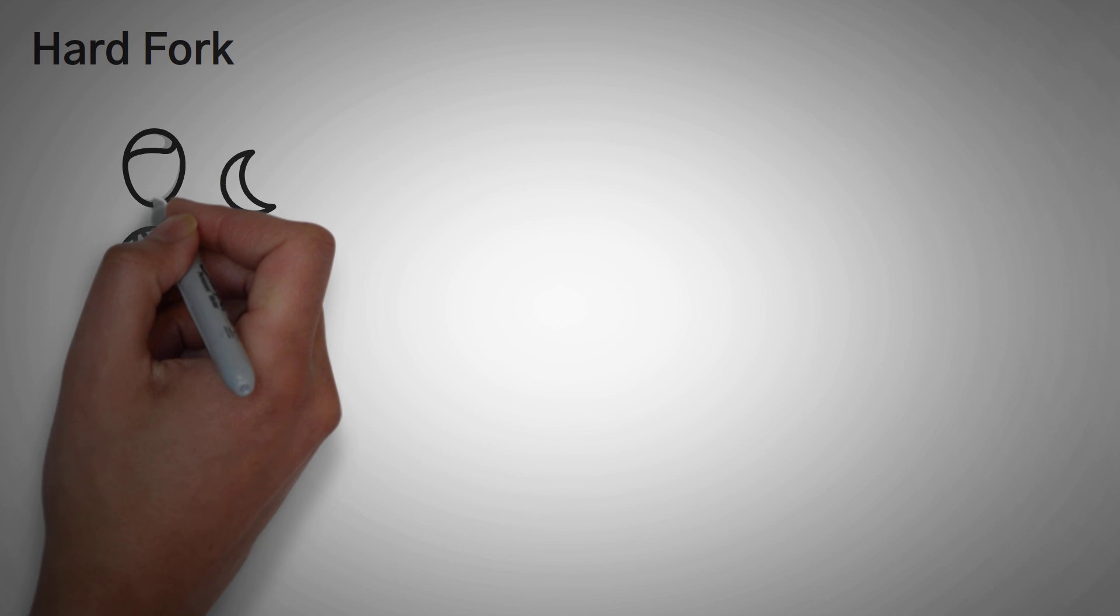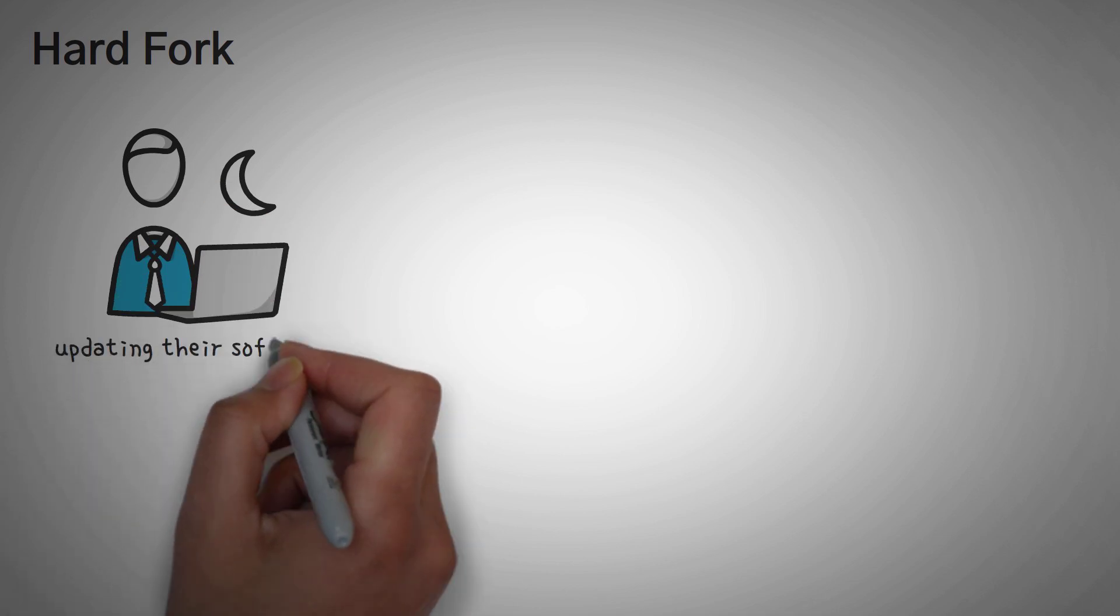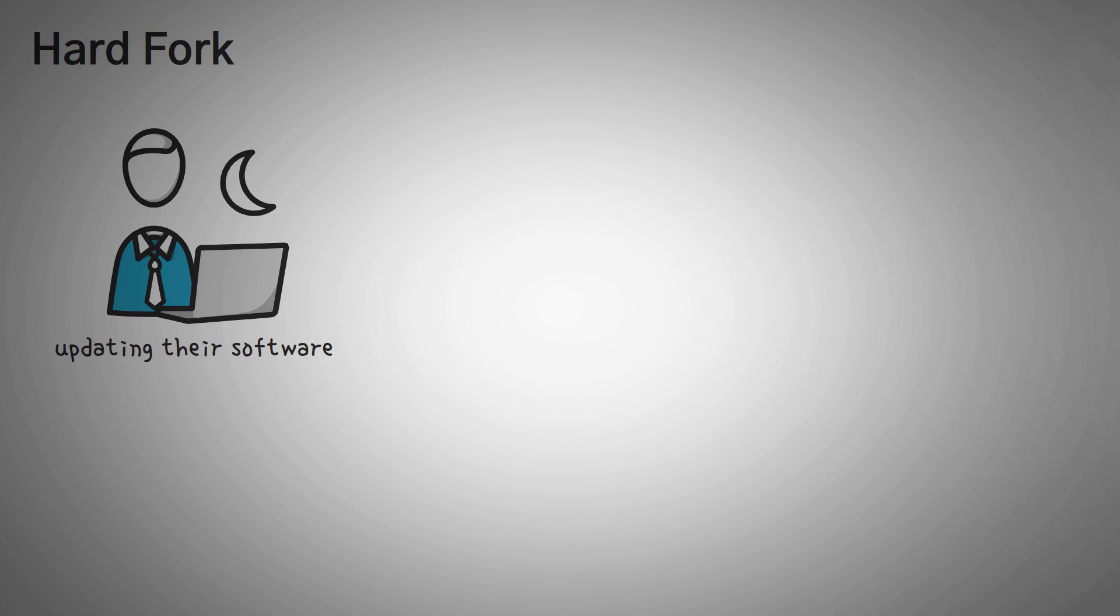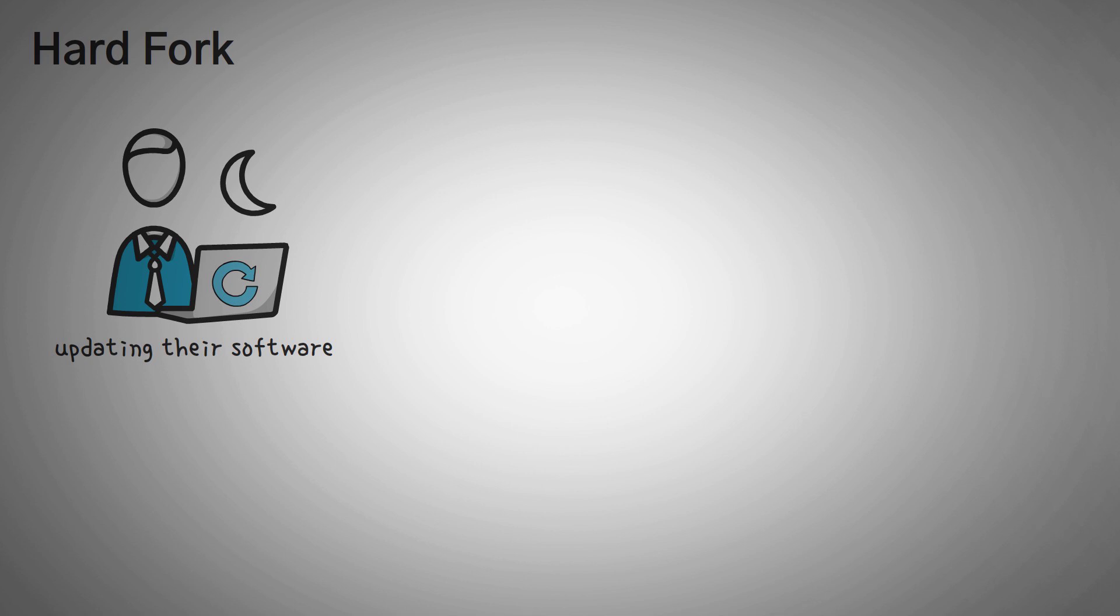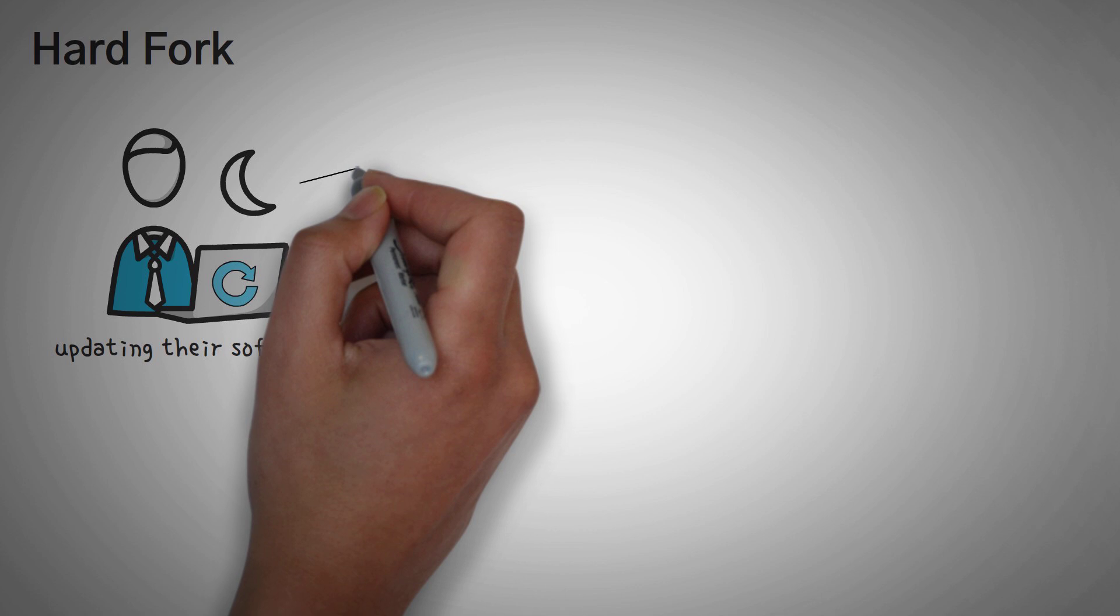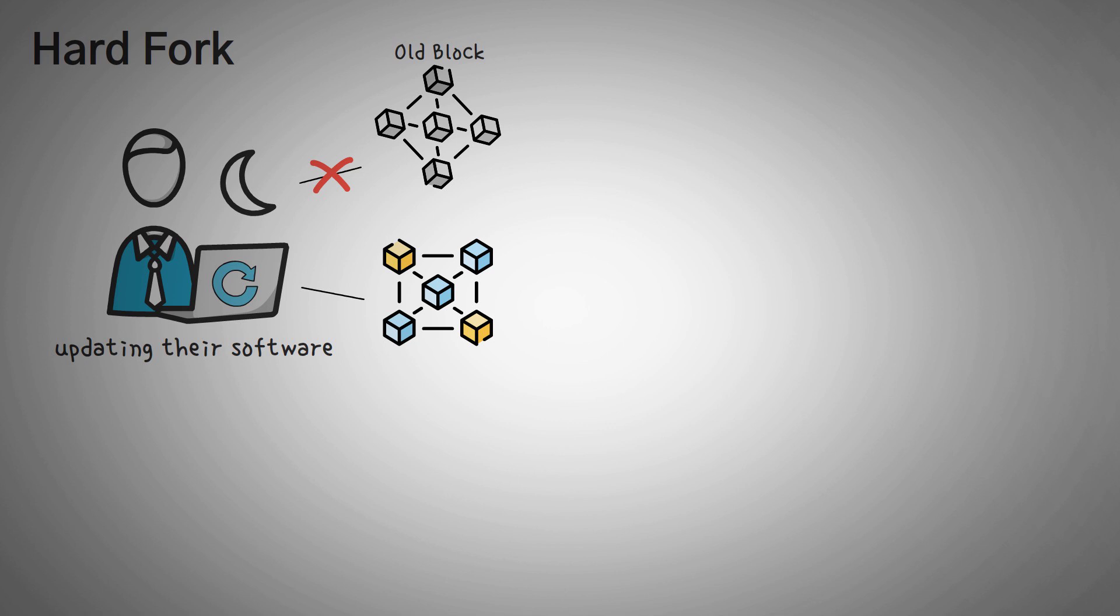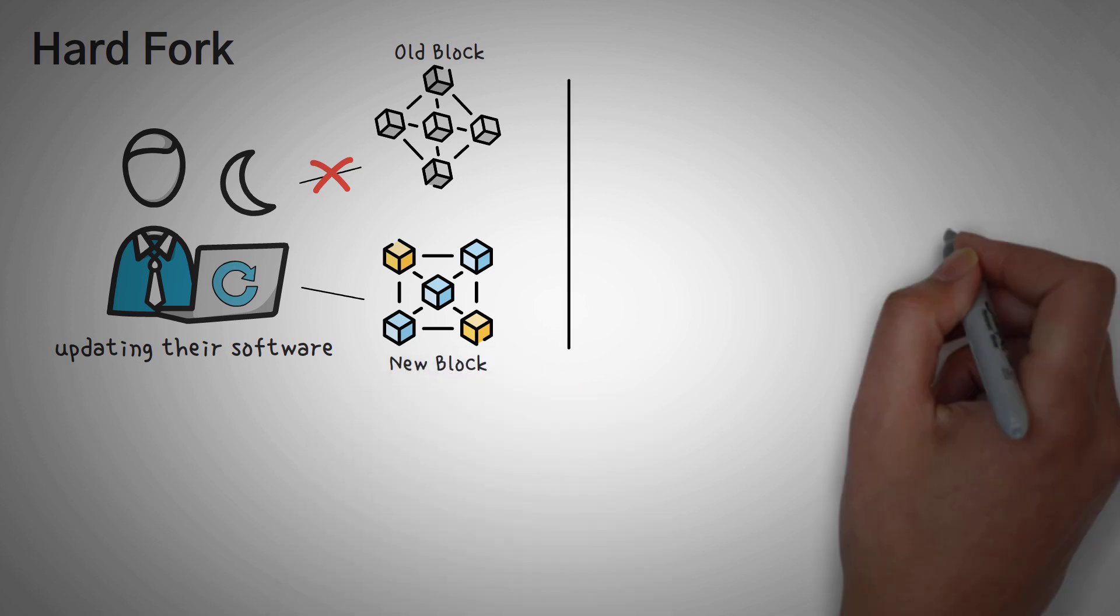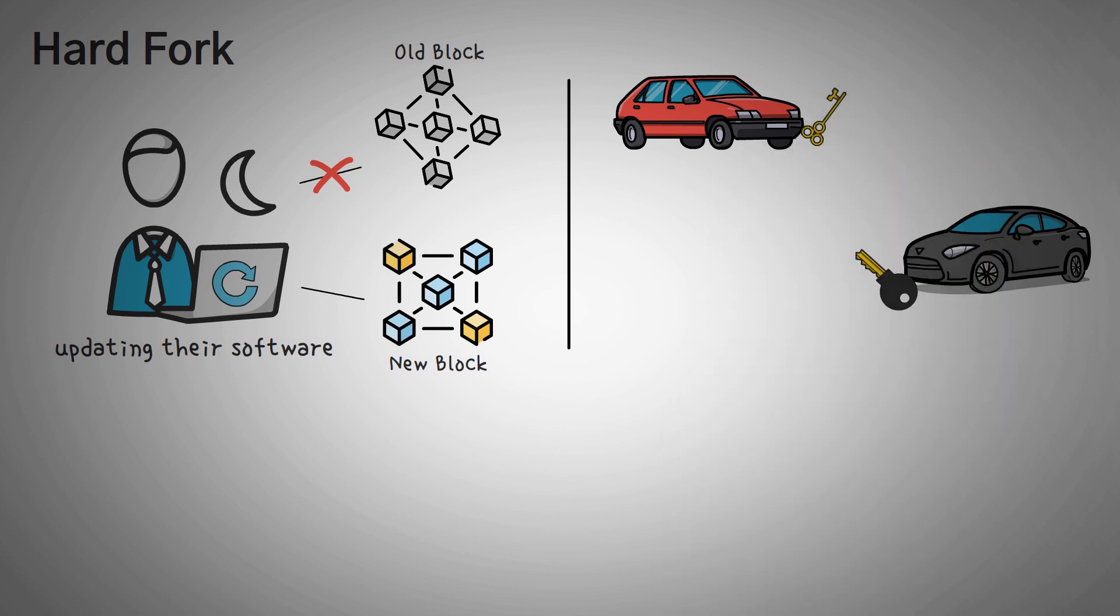Next up, we have a hard fork. Now a hard fork does require the miners to do something. Whether it's updating their software, or change some number in the software, or some other internal action, a miner must make changes to continue contributing to the network if a hard fork happens. Now the idea here is that the old blocks are so different from the new blocks that the miner's old software can't work with it. It's kind of like if you buy a new car. You probably have to get a new key. The old key just won't work, and it might not even fit. It may be even a completely different type of key depending on how old your car is.